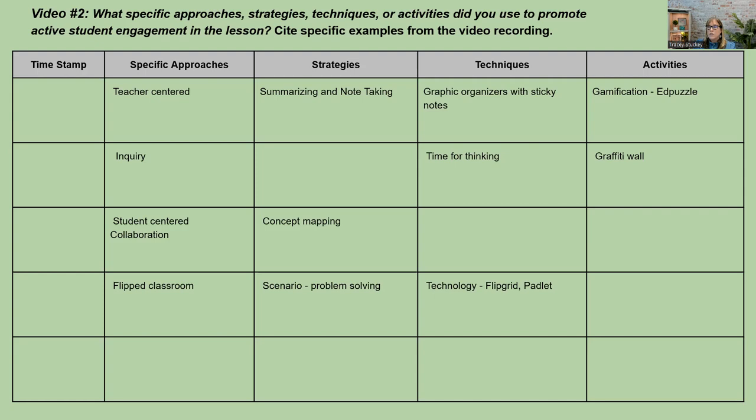Those students are still engaged in it, because I'm looking for active student engagement here — that's the other part of this question. With a teacher-centered approach, the teacher is talking and students are gaining information. What kind of active engagement are they doing? It's active listening. But these are the things that will really get them engaged even in a teacher-centered approach. Inquiry might give time for thinking as a technique. And then you might have a graffiti wall where students are moving around and flowing through the inquiry cycle.